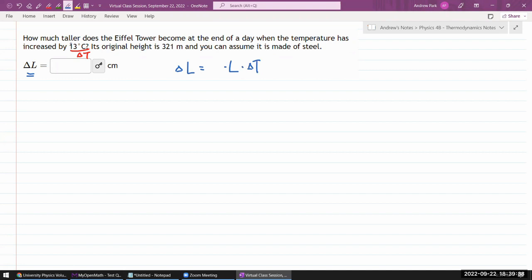If you simply have meters times degrees C, that doesn't give you meters back. So what you need is a coefficient of that proportionality. This is what we call the coefficient of linear expansion, indicated by the letter alpha.